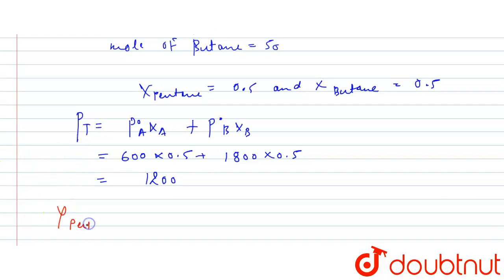Y pentane is equals to 300 divided by 1200, which equals 1 by 4.